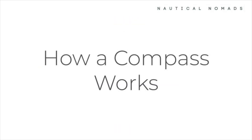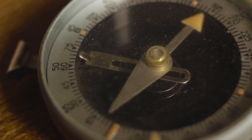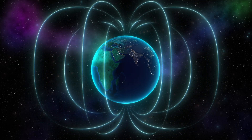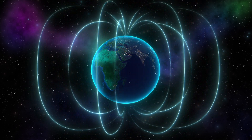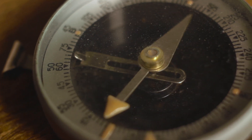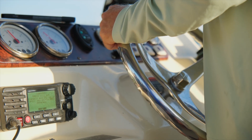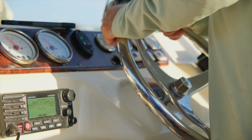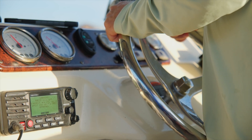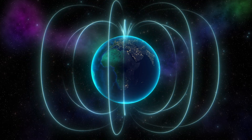Let's dive deeper into how magnetic compasses work. A magnetic compass uses the Earth's magnetic field to align a needle or card with the north-south axis, giving you a reliable reference point. Most magnetic compasses are suspended in liquid to dampen movement and make the needle more stable. There's also a more advanced type called a flux-gate compass — an electronic device that senses magnetic fields and is often integrated with systems like autopilot or radar, though it relies on electrical power.